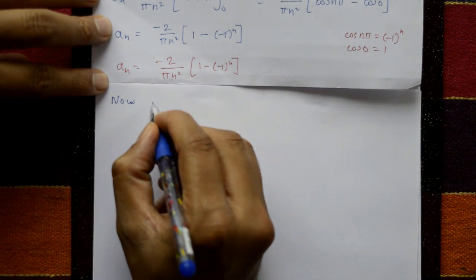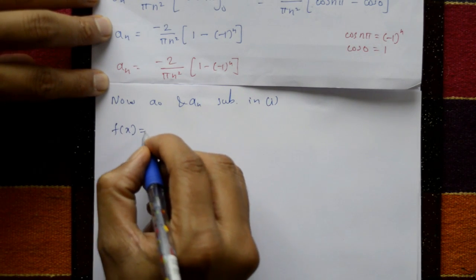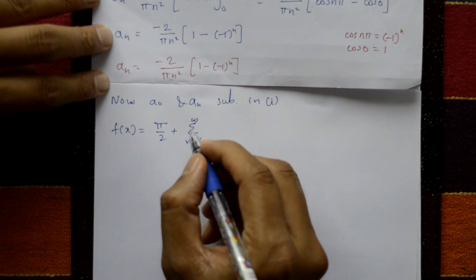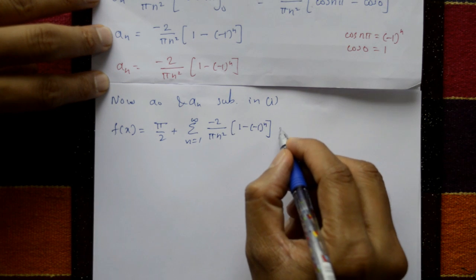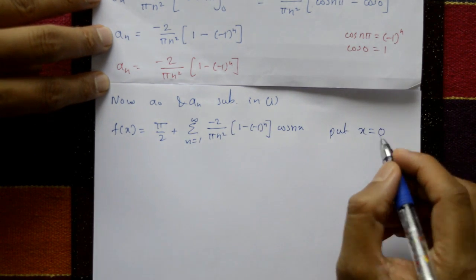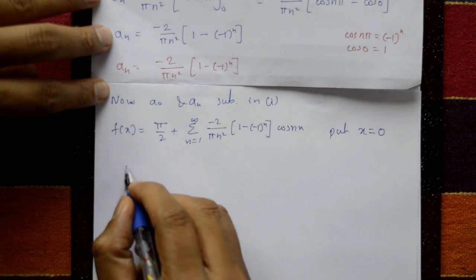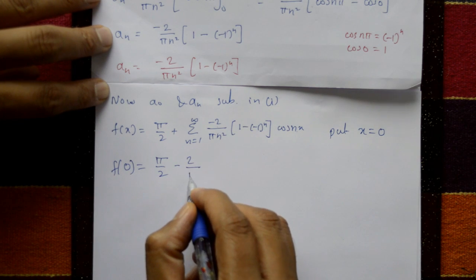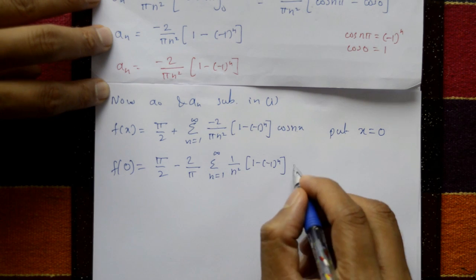Substituting a₀ and aₙ back into equation 1: f(x) = π/2 + summation n=1 to infinity of [−(2/πn²)(1 − (−1)ⁿ)] cos(nx). To deduce the series π²/8, we put x = 0, since cos(0) = 1. f(0) = |0| = 0.